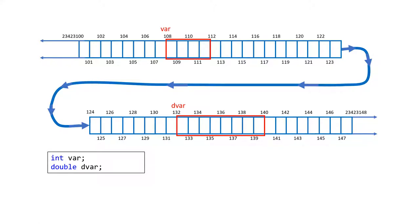Knowing that, let's go back. We need to be able to access our variables using their address. To do that, we need to design a new type — a new type of integer that we call a pointer. A pointer is essentially an integer whose job is to keep the address of other variables.